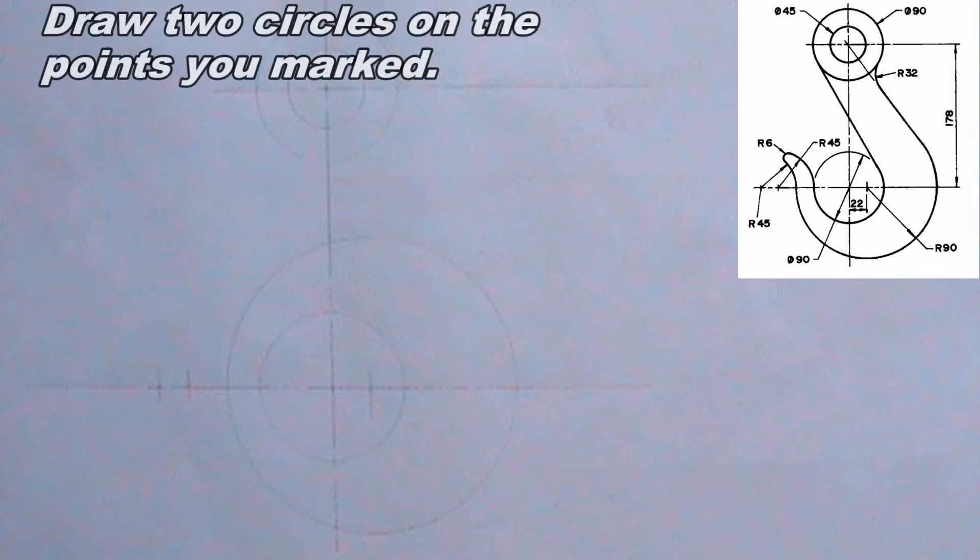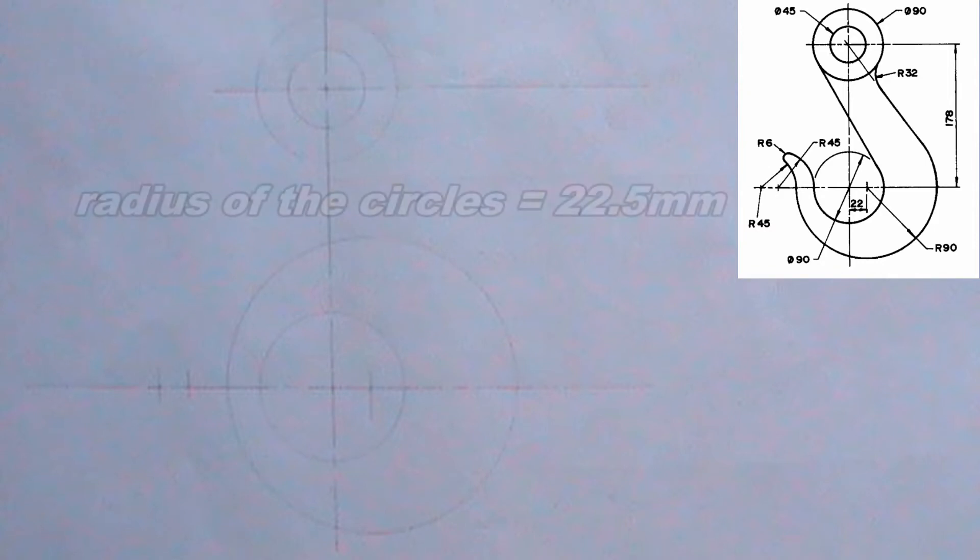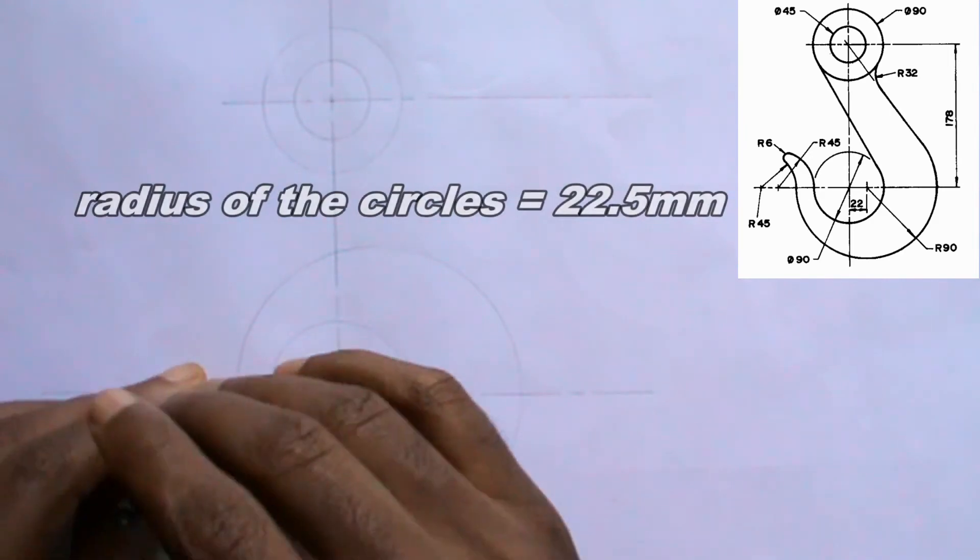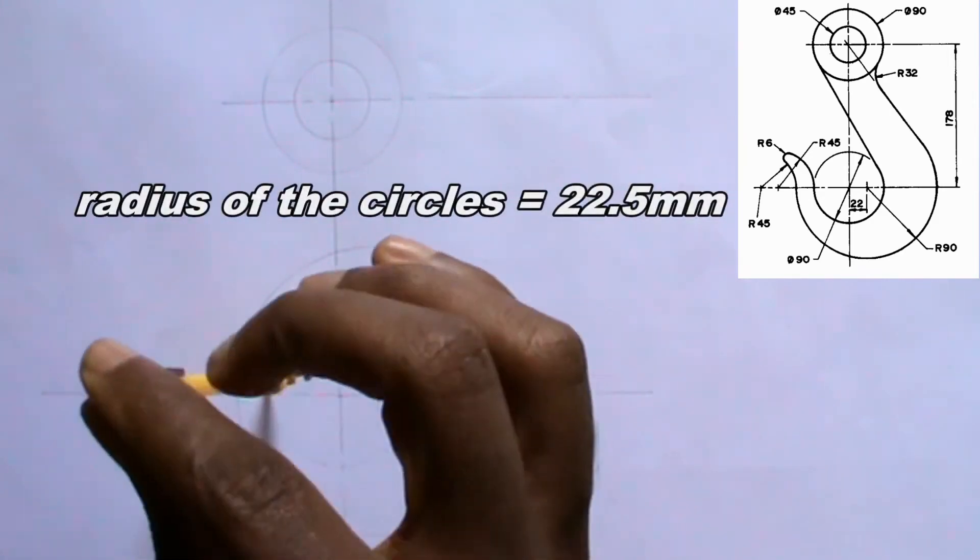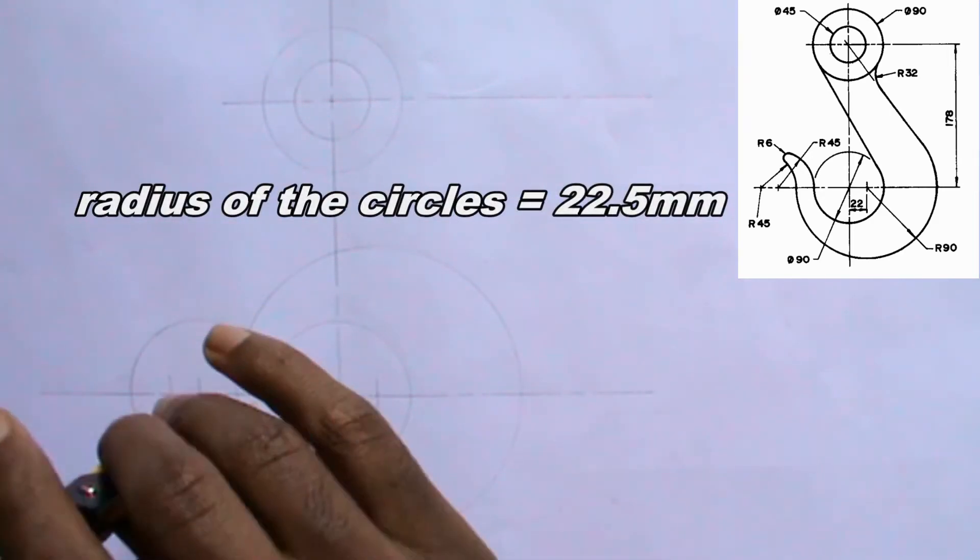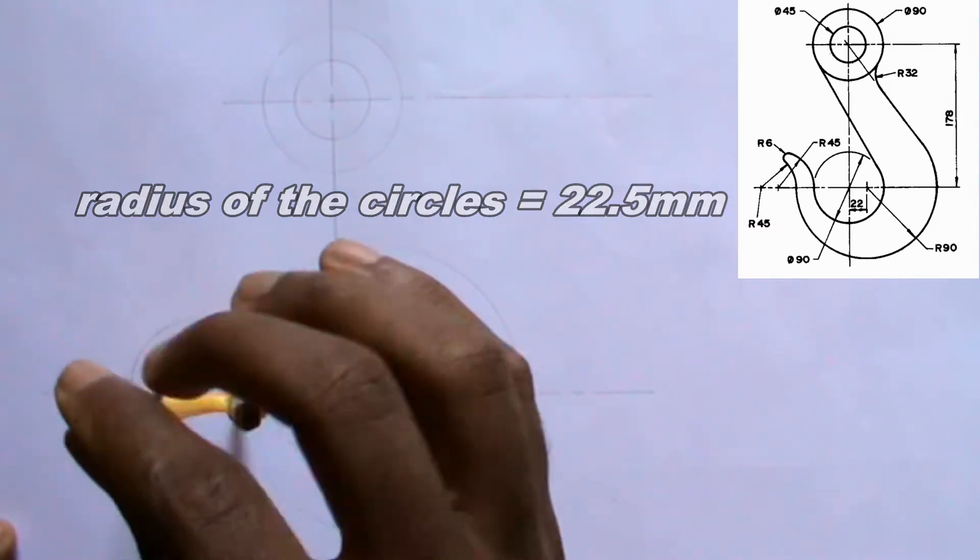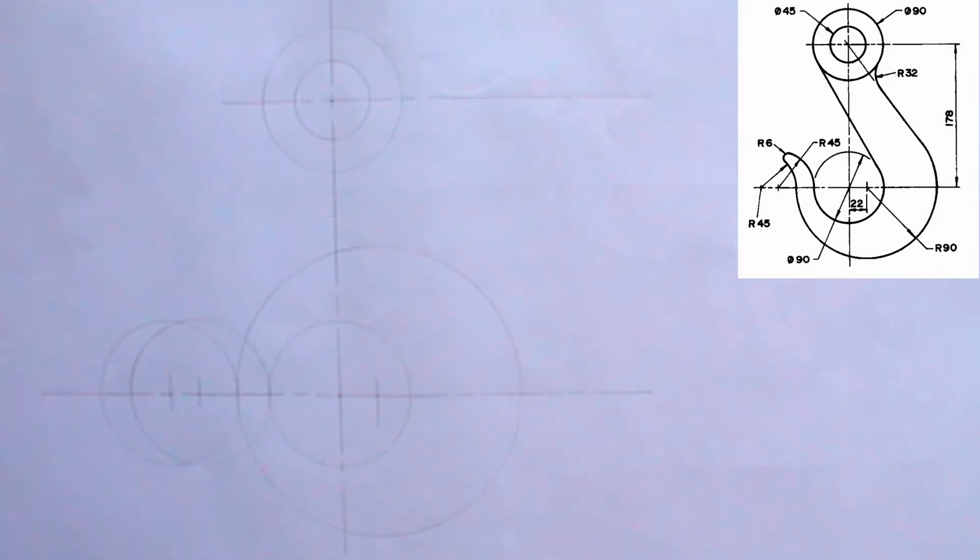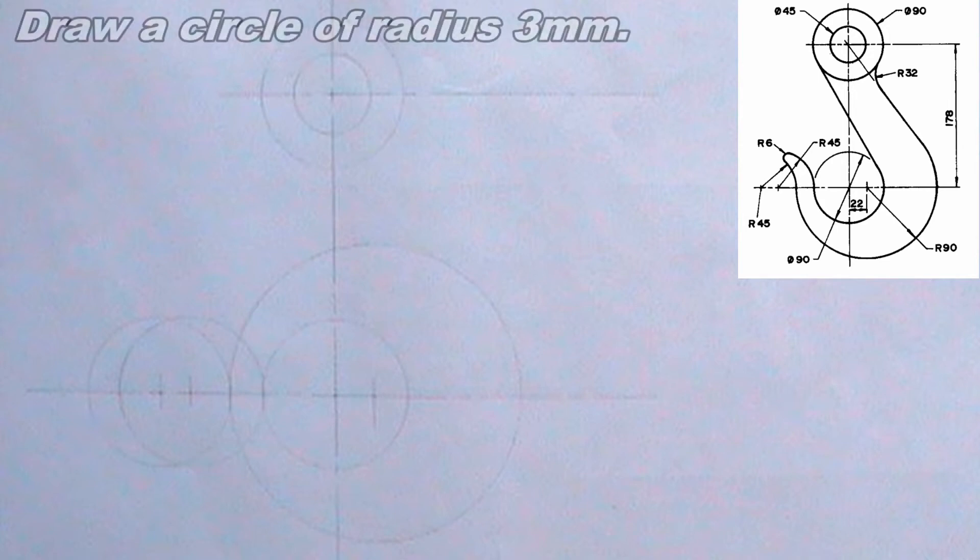Now I will draw two circles by placing my compass on the two points I marked. The radius of the circles should be 22.5 mm. I will draw a circle of radius 3 mm this way.